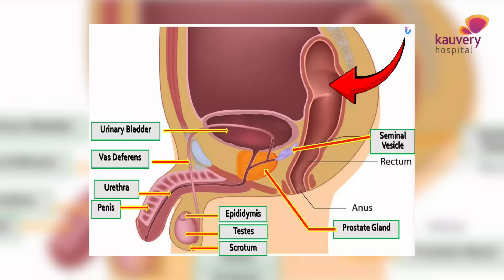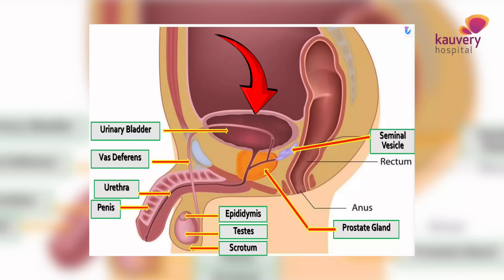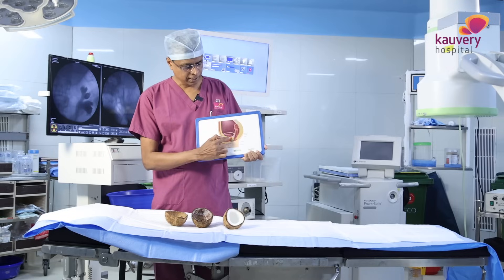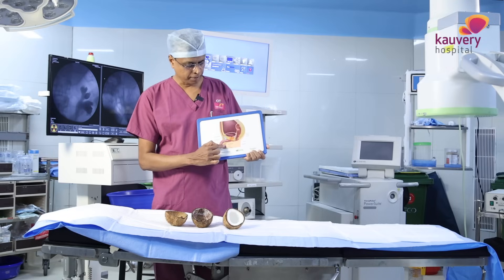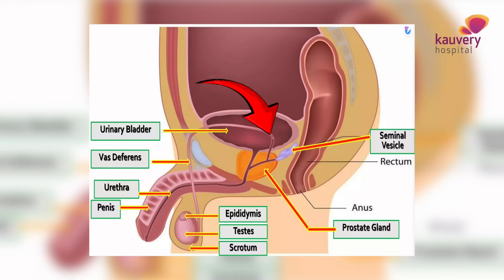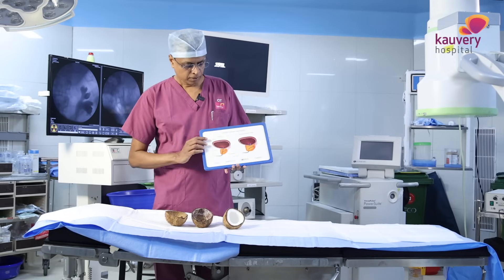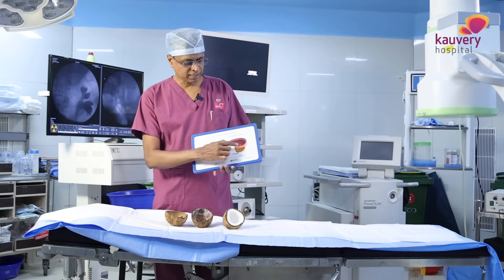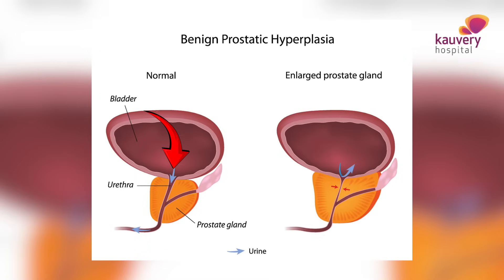This is the urinary bladder. There is a joint at the base. One part of the prostate forms a junction. You can see the testicles as well. This is the prostate — this is the normal prostate gland. If I tell you about the urinary passage, this is the urinary passage running through the prostate.